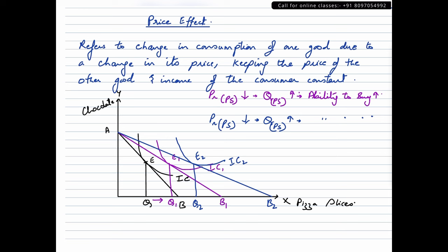Likewise, the quantity consumed of pizza slices which is listed on the X axis increased from Q to Q1 the first time and from Q1 to Q2 the second time. So the movement from point E to E1 and E1 to E2 is the price effect. I hope we are able to understand what price effect is.